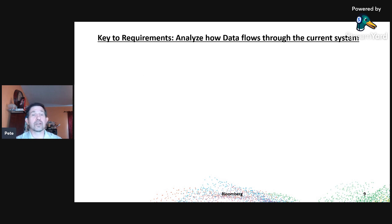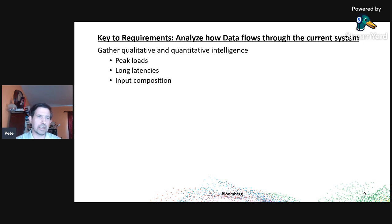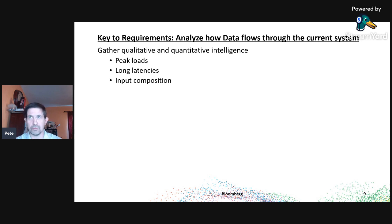The next key is requirements: analyze how data flows through the current system. This is something I think is very neglected in legacy rewrites — we're so enamored with designing a new system that we don't wonder what's actually going on in the old one. You need to gather qualitative and quantitative intelligence: what are the peak loads, what are the long latencies, what is your input composition, what types of input cause the problem, and what are their frequencies? This often means going back and adding instrumentation to the legacy system.